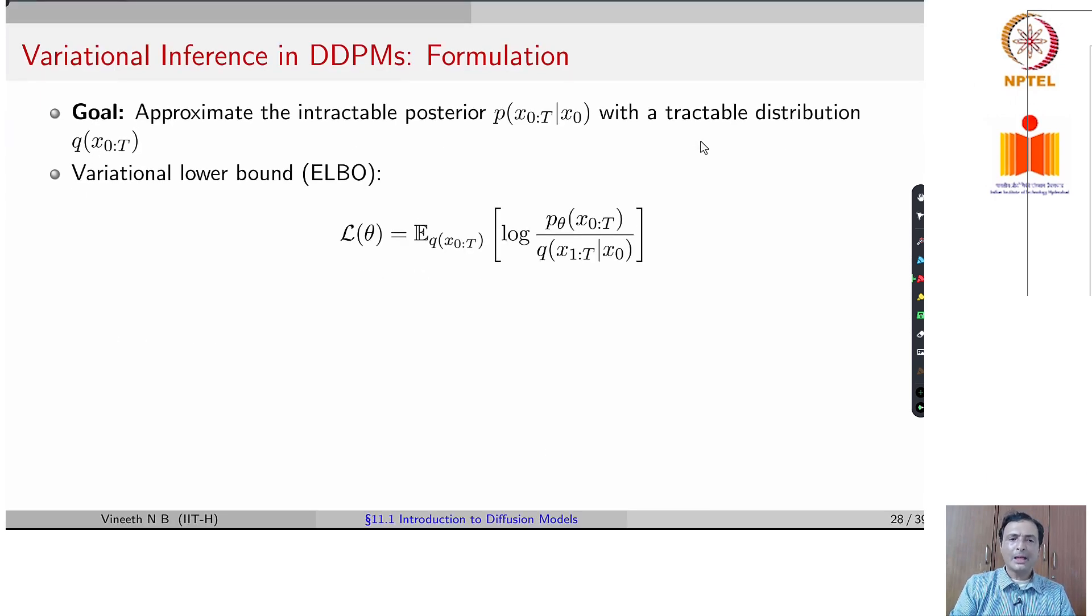We already know that the variational lower bound in this case is given by the expectation over q's log of p theta of x0 to t divided by q x1 to t given x0. We are going to show how this comes in the next few slides.